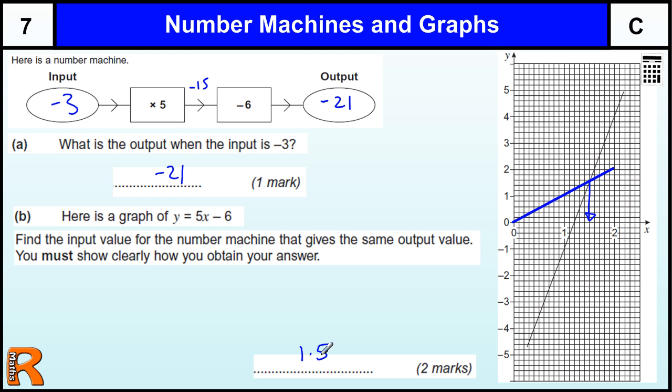So you should get the value of 1 and a half. So if we just check, if we put 1 and a half in times by 5 we get 7.5. Take away 6, that gives us 1 and a half. So that works.